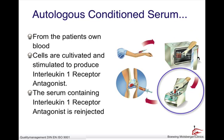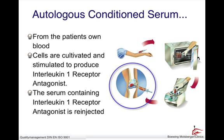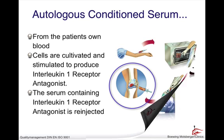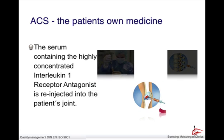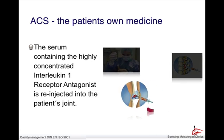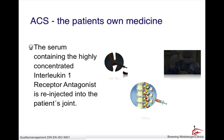A centrifuge then separates the amber serum from the blood clot. At the end, this serum contains high concentrations of protective and regenerative proteins and is injected into the patient's affected joint. The serum is filled into several syringes and can be injected directly into the afflicted area of the knee, any other joint, or the spine.